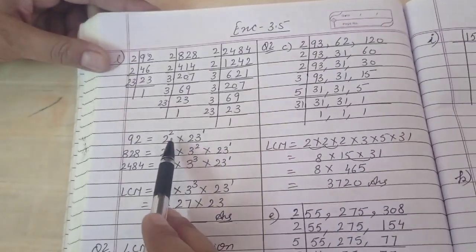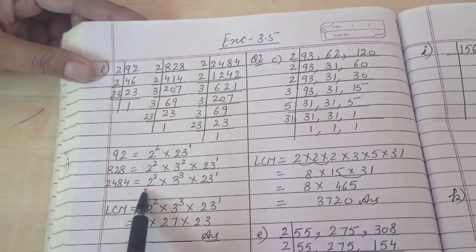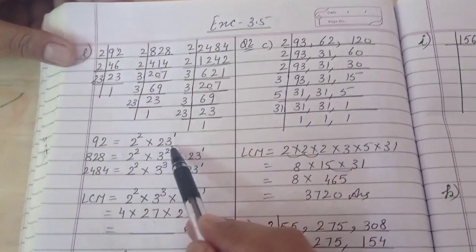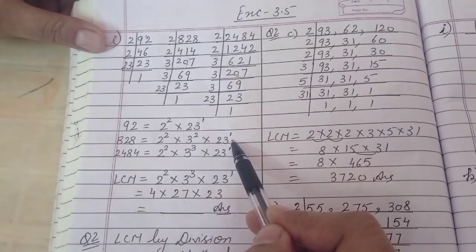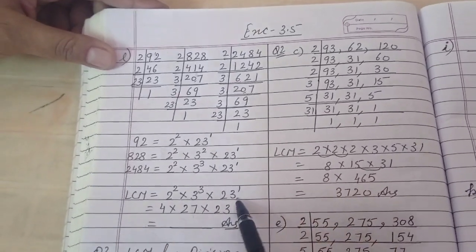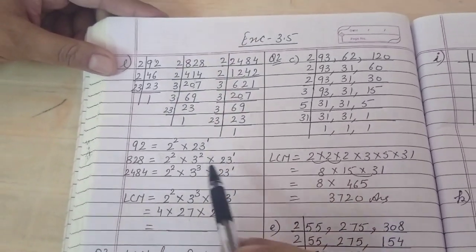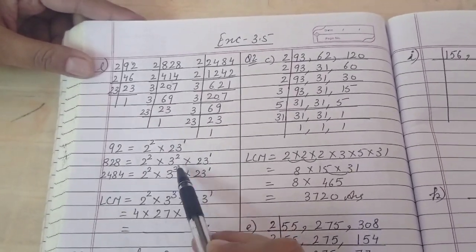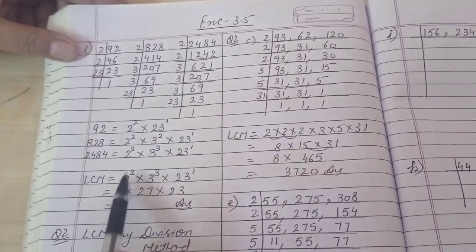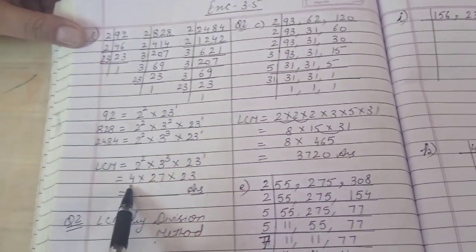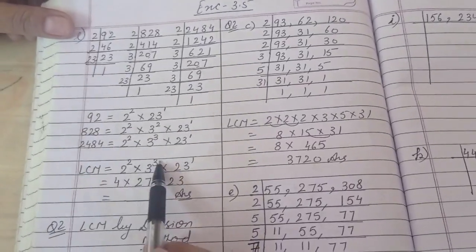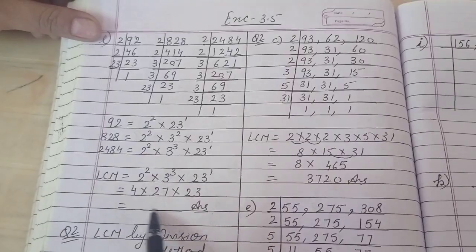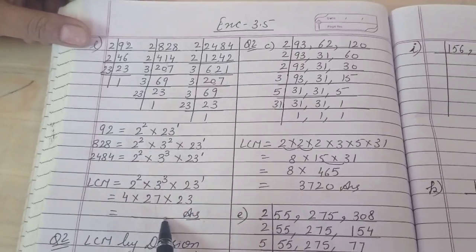Let's take the LCM. 2 power 2, 2 power 2, 2 power 2 — all same, take as it is. 23 power 1, 23 power 1, 23 power 1 — same, taken once. 3 power 2 and 3 power 3 — the greater is 3 power 3. So: 2 power 2 means 4. 3 power 3 means three threes are 9, nine threes are 27. And 23. Multiply — that will be your LCM.